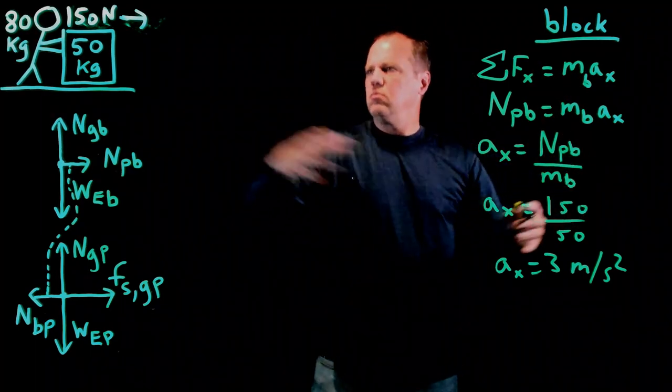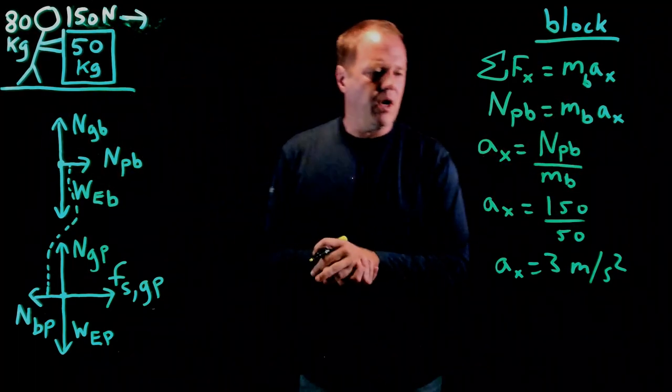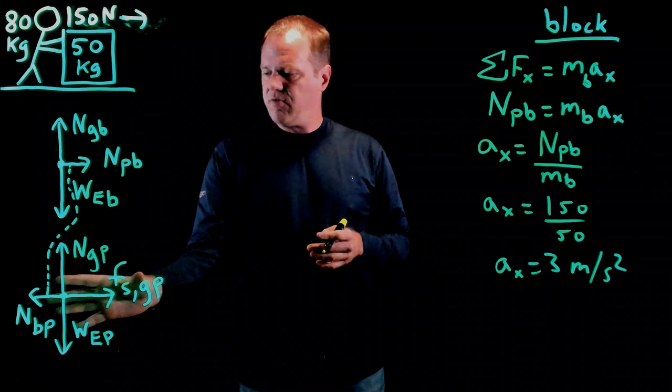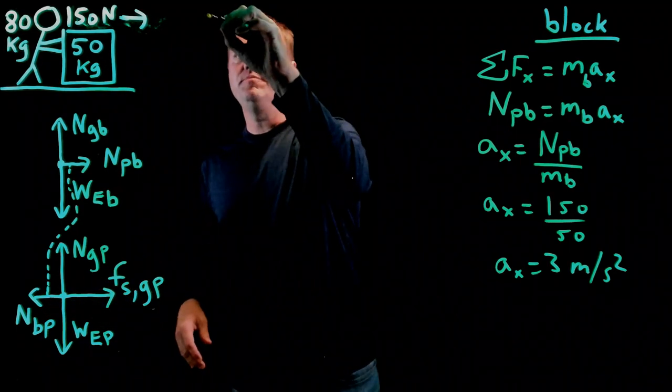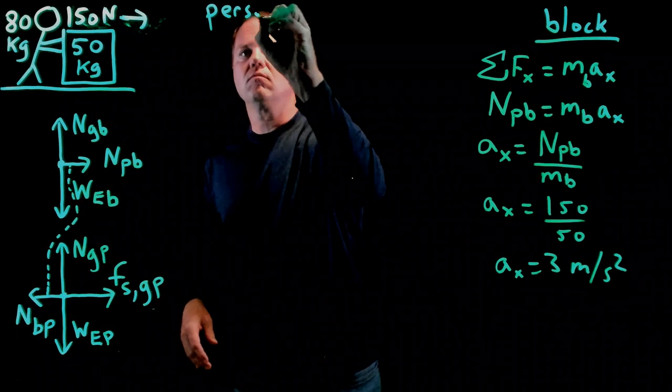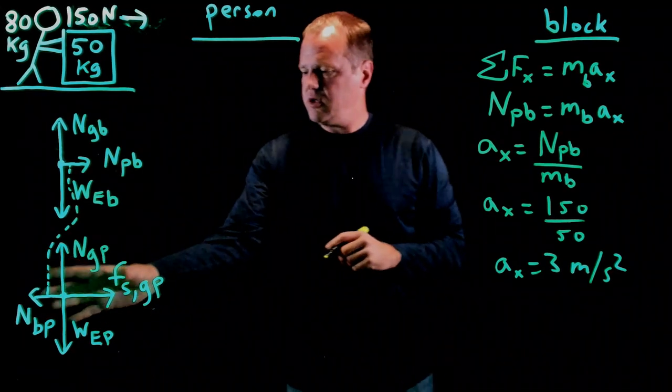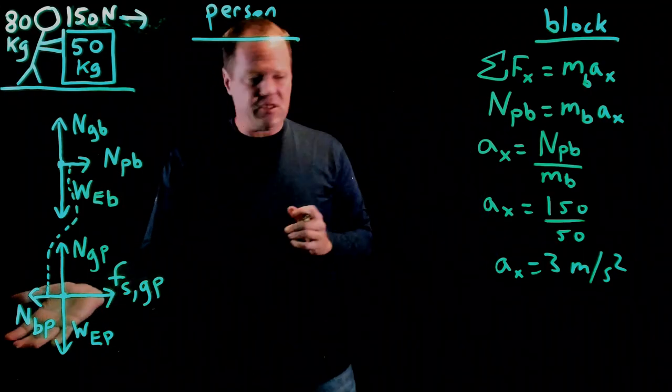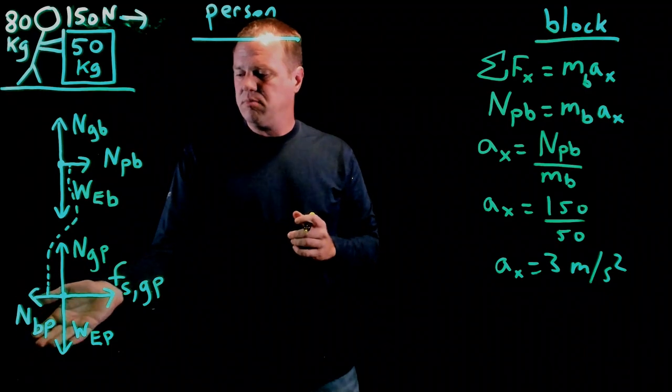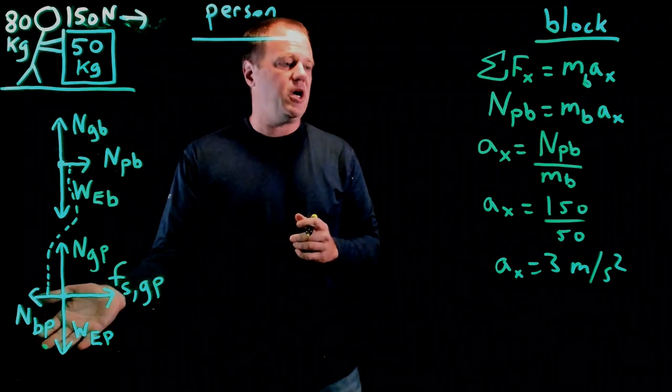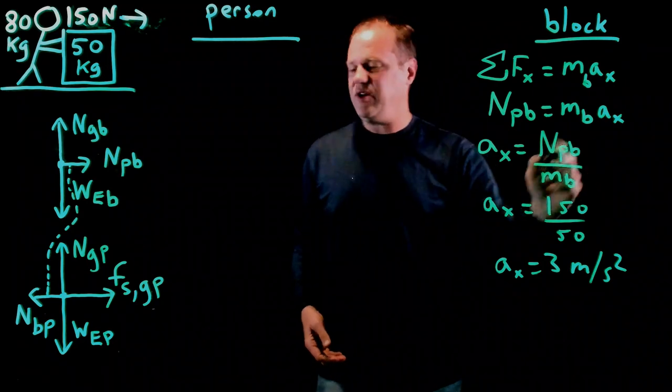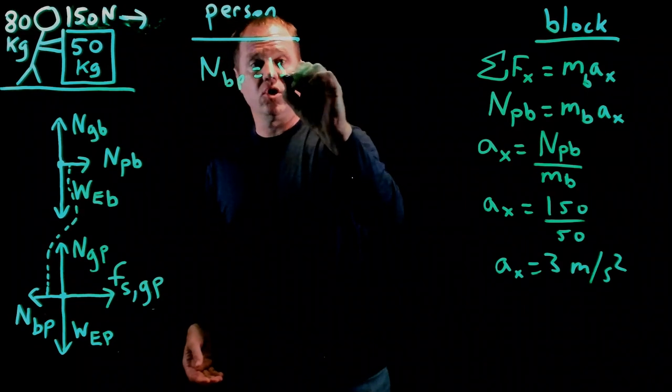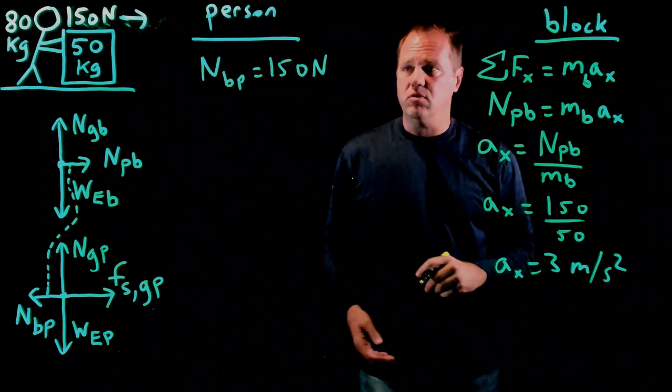Okay, so, again, there is stuff happening in the y-direction, but I'm just going to ignore it. Okay, so let's look at the x-direction for the person. So, for the person, and I'm going to calculate, I'm going to determine all of these forces. And, in fact, I don't have to do any math here. I can just simply assert that the normal force by the block on the person is 150 newtons. So, normal force of the person on the block, 150 newtons. We can just assert normal force of block on person by Newton's third law is 150 newtons.